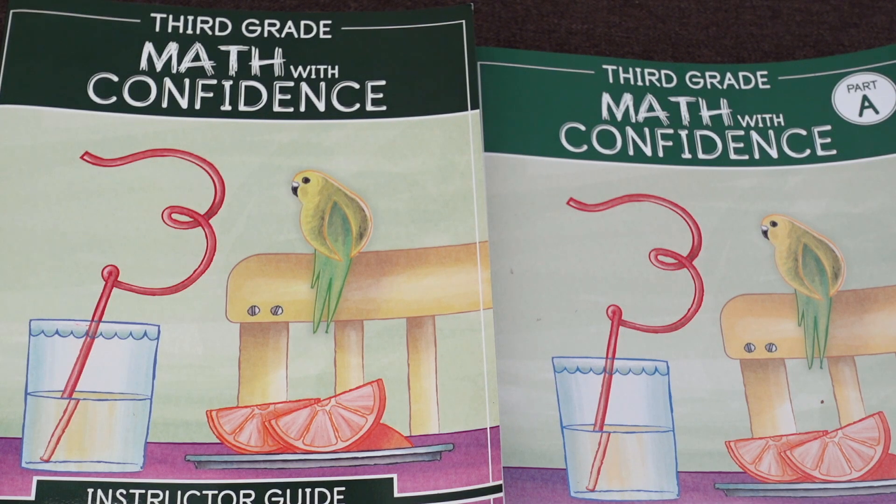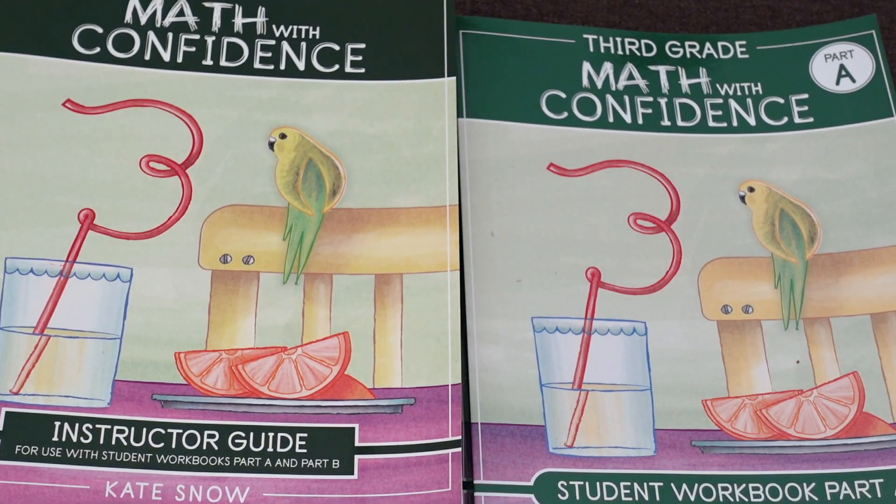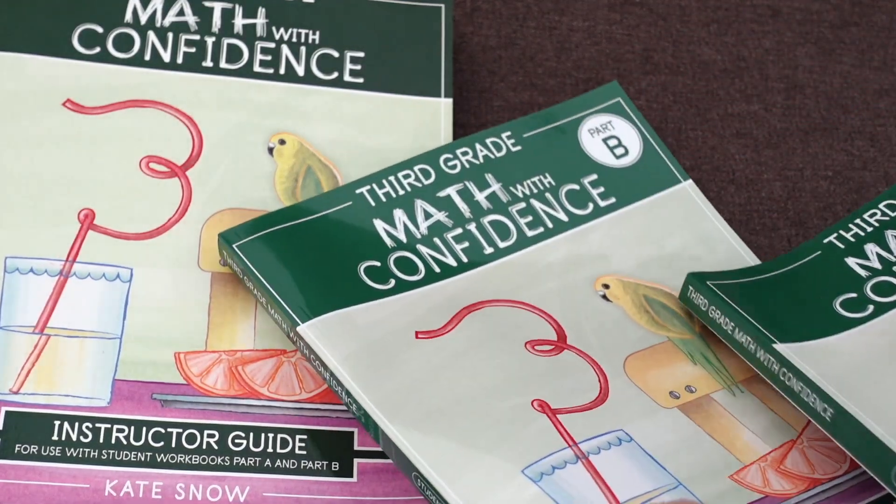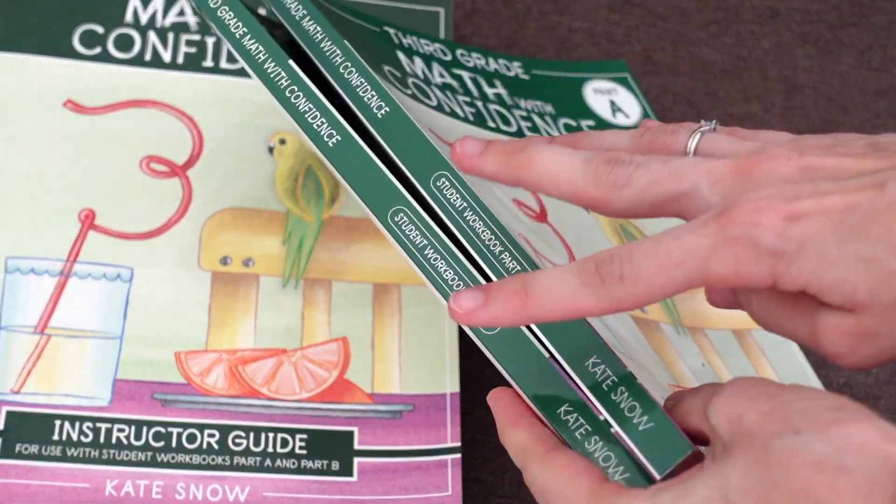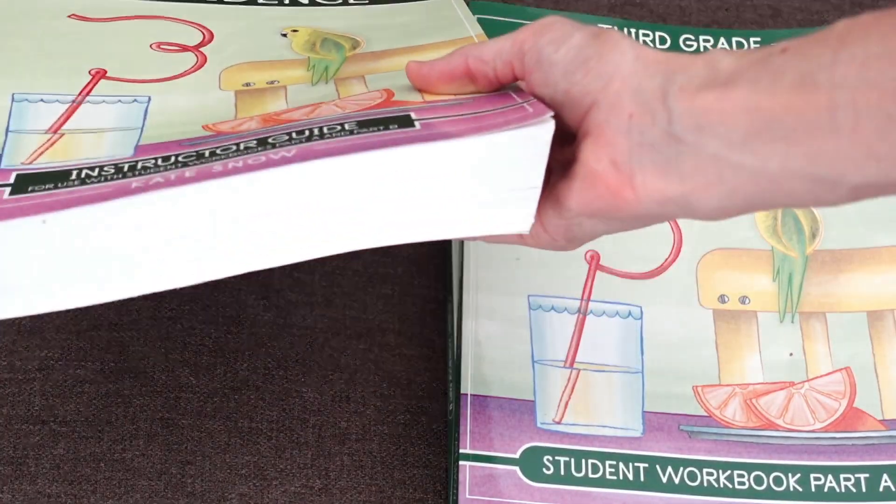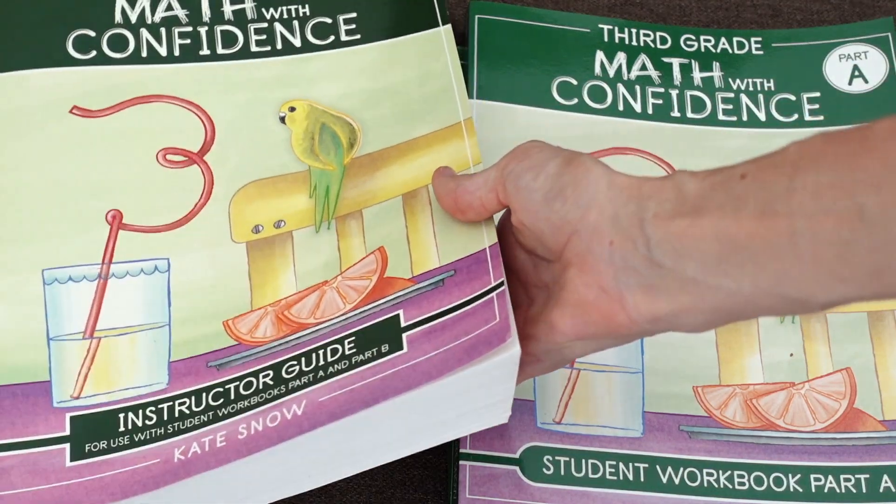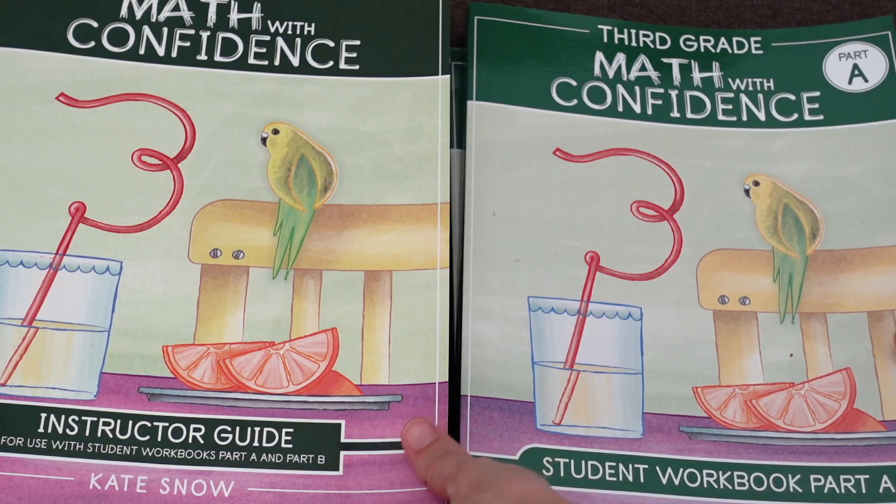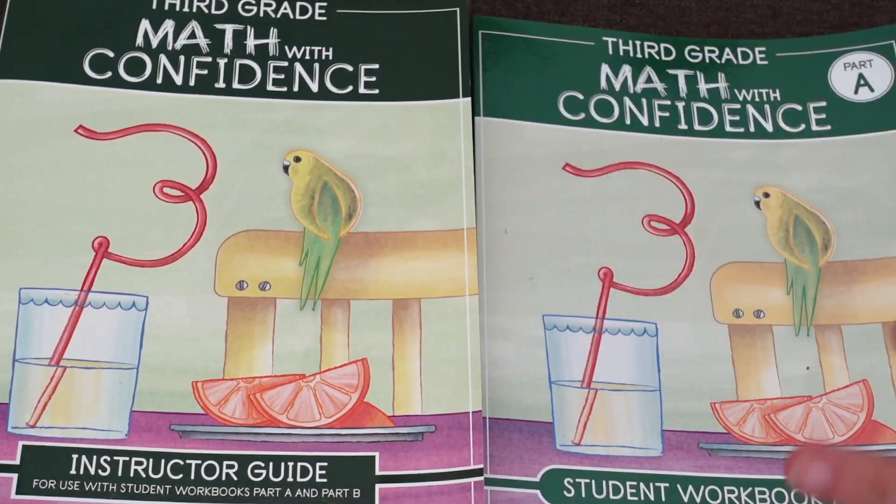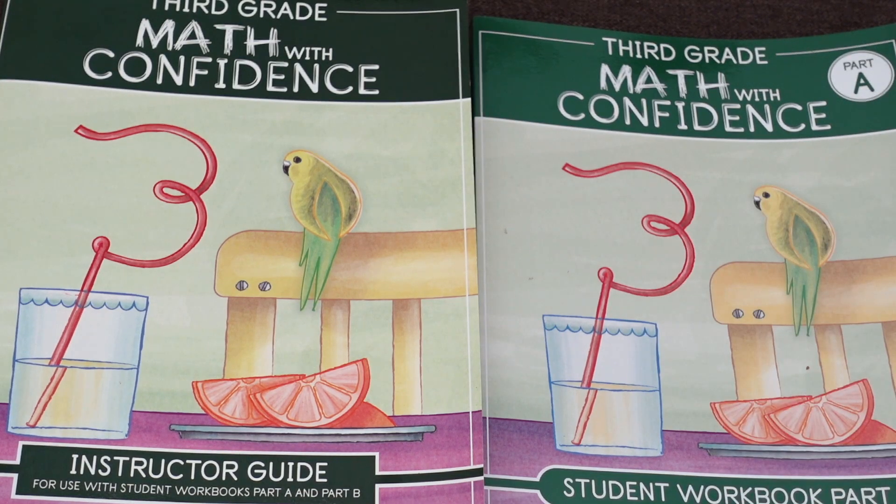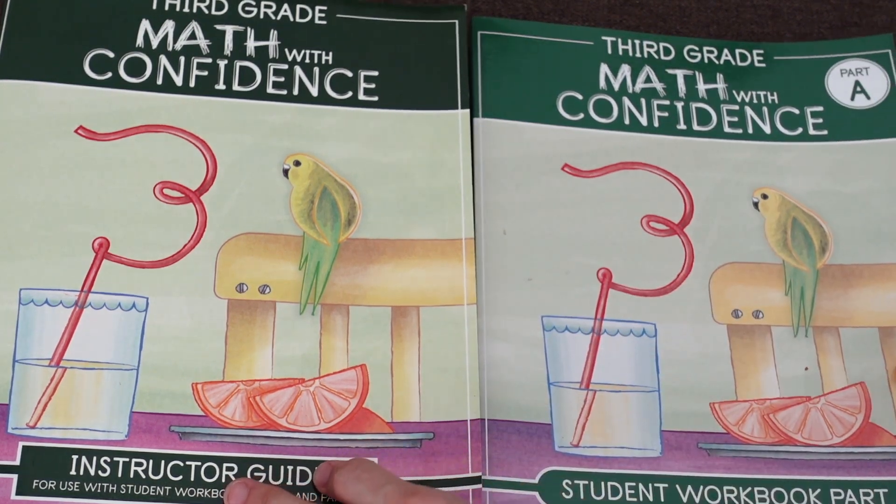Now let's take a look at third grade Math with Confidence by Kate Snow. These are the key components of the curriculum. We have the instructor's guide. And then we have the student books, part A, as well as part B. They split the student book probably just to keep the student book at a more manageable size for your student. The instructor's book is just as thick as it is for all the grades. Math with Confidence is known for the hefty size of its instructor's guides. There are a couple of differences between the structure of third grade as compared to first grade or second grade. So I'll talk about that a little bit as we go through.